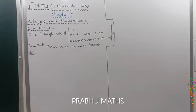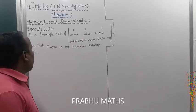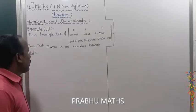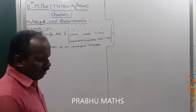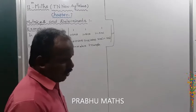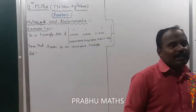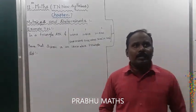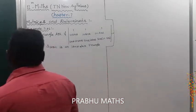Example 2.16: In a triangle ABC, if a 3x3 matrix determinant is equal to 0, prove that triangle ABC is also an isosceles triangle. An isosceles triangle is one where any 2 sides are equal — that is called an isosceles triangle.